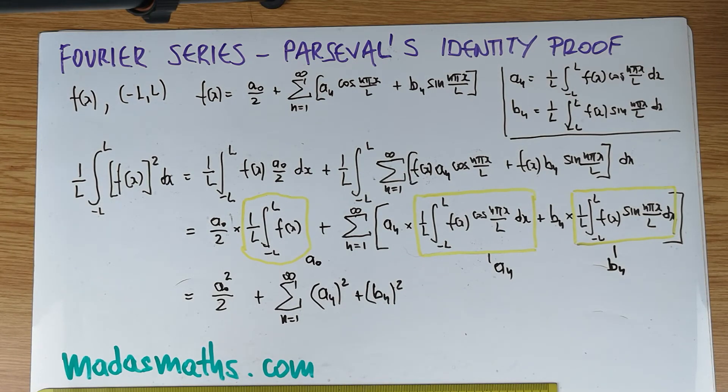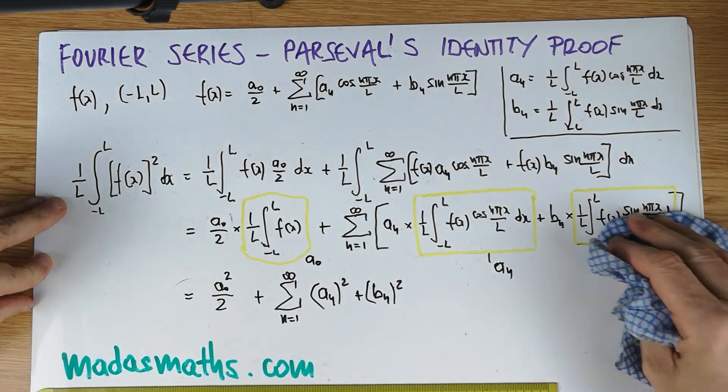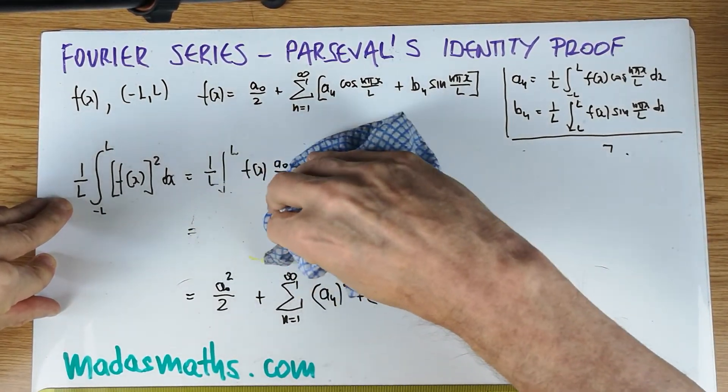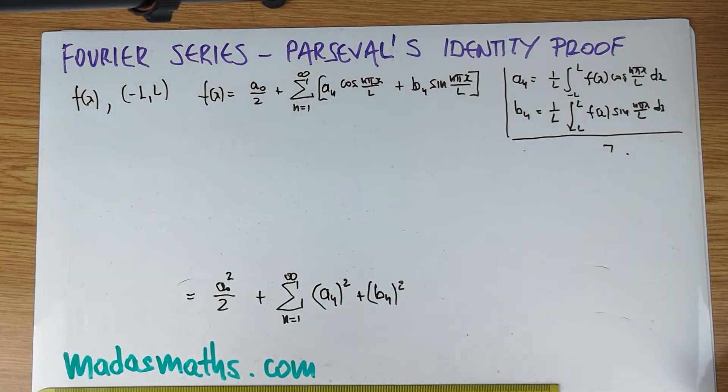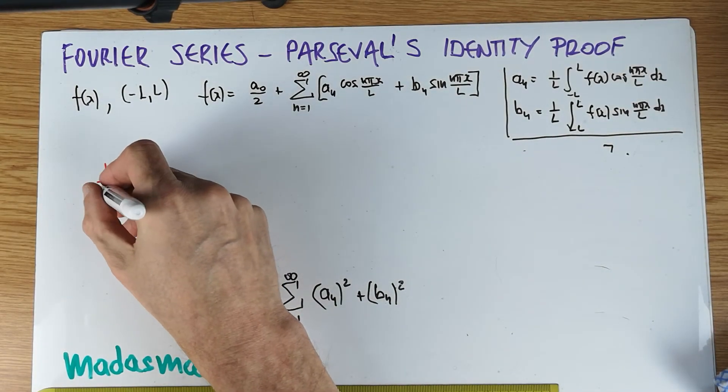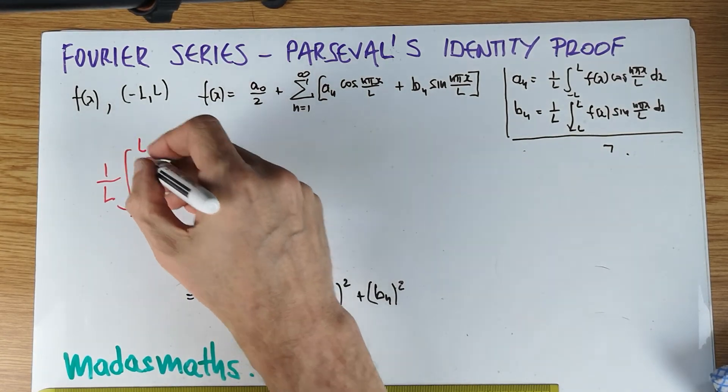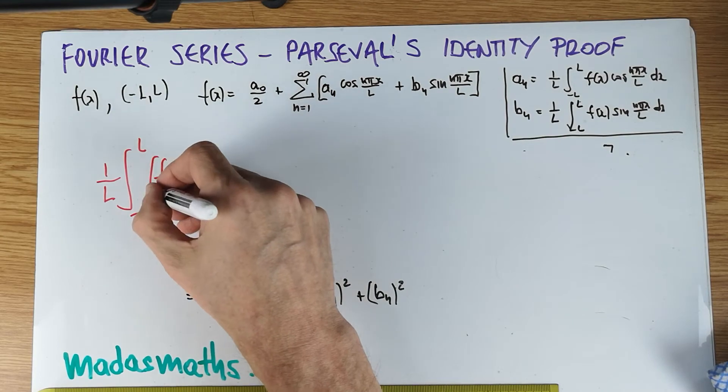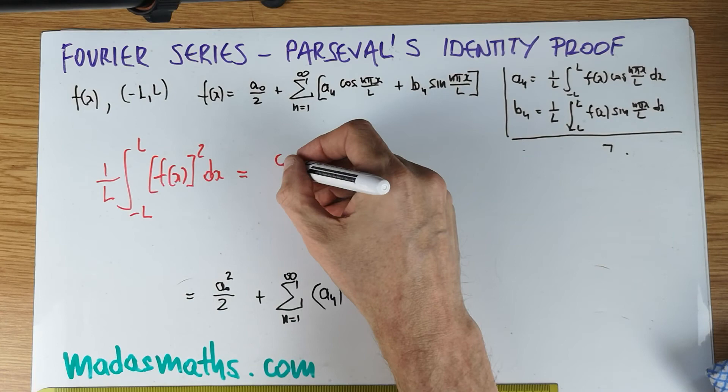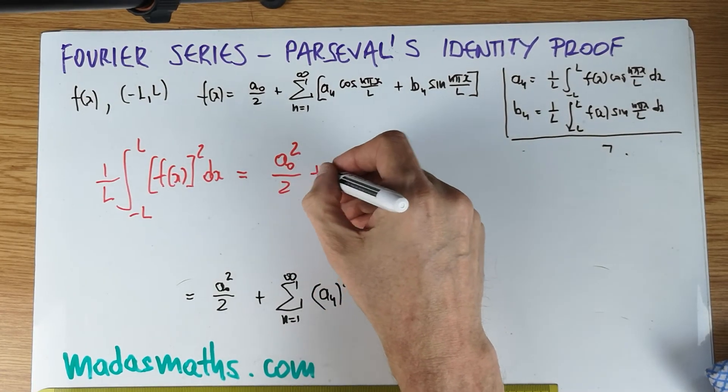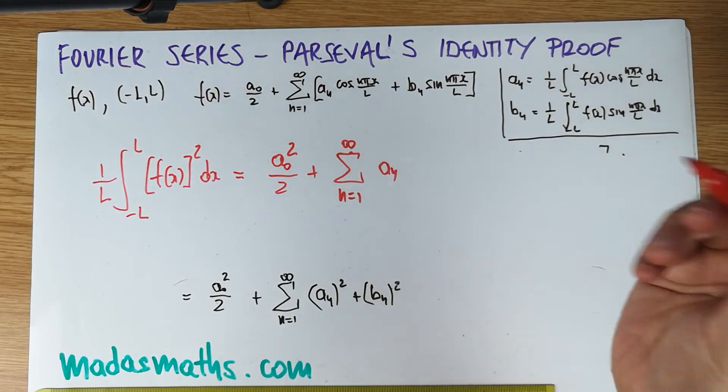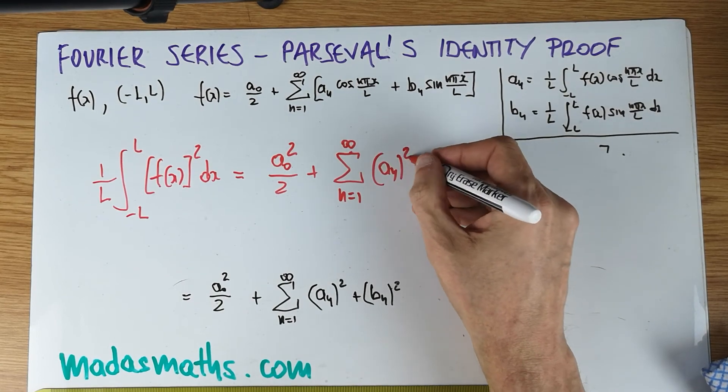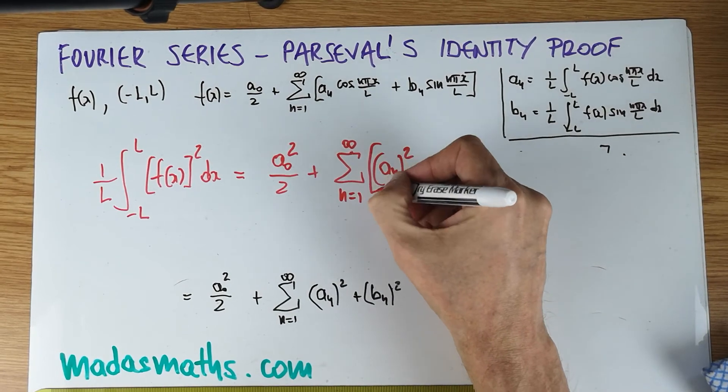He's saying if we have a Fourier series and the coefficients, the following thing is true: the integral 1 over l from minus l to l of f of x squared dx equals a_0 squared over 2 plus the sum of the coefficients squared, like the a_n's squared plus b_n's squared for n equals 1, 2, 3, 4, 5. The a_0 is kept separately. So this is Parseval's identity.